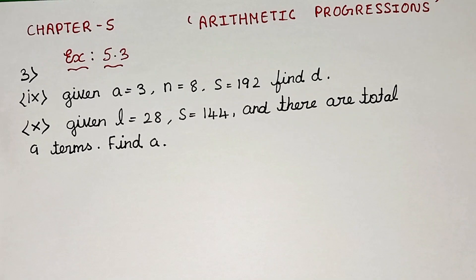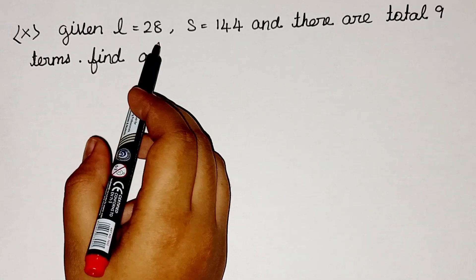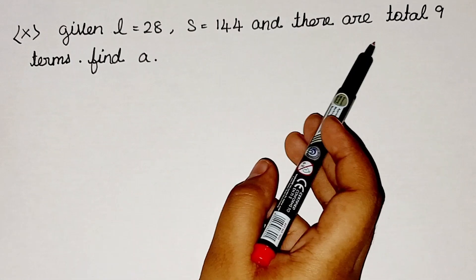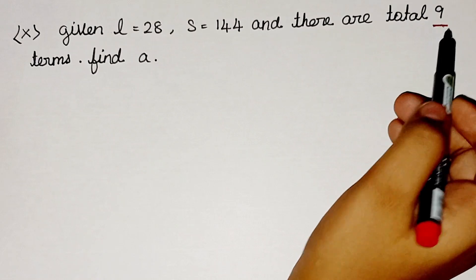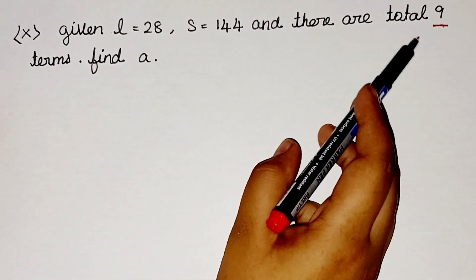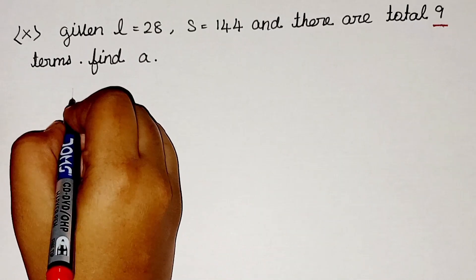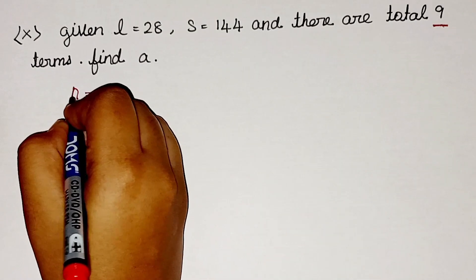Now let's solve the 10th subdivision. So here given L = 28, S = 144, and there are total 9 terms. Find a. So what is the meaning of this total 9 terms? Total 9 terms is nothing but n = 9.